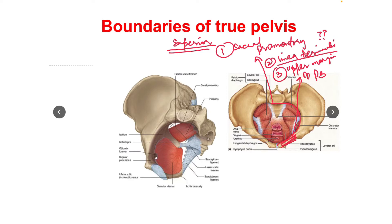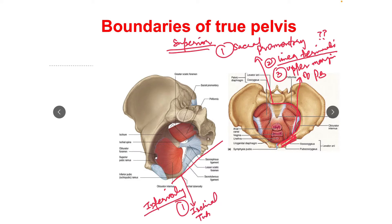इसके बाद हम देखते हैं कि inferiorly कौन-कौन सी boundaries आती हैं true pelvis की। Inferiorly पहले आता है ischial tuberosity, and the next one is tip of coccyx. यह दोनों मिलकर बनाते हैं inferior borders of the true pelvis.